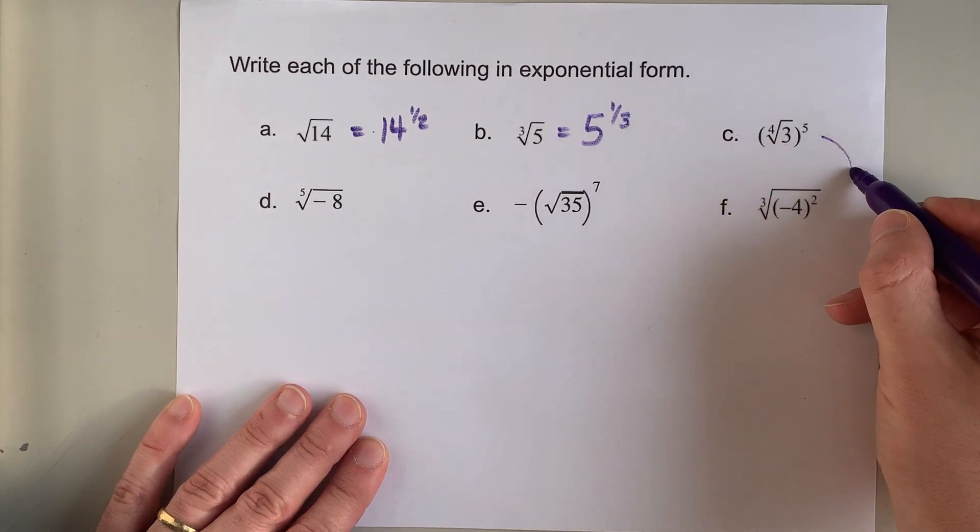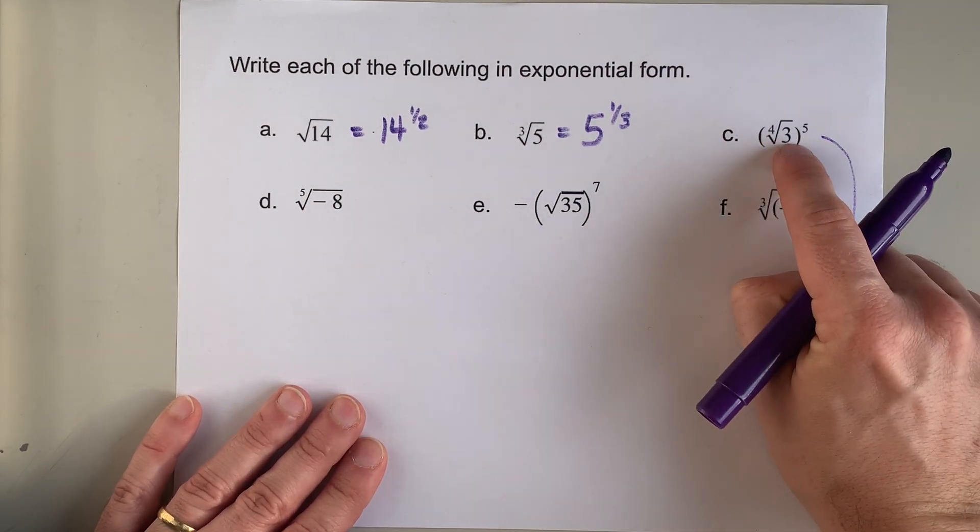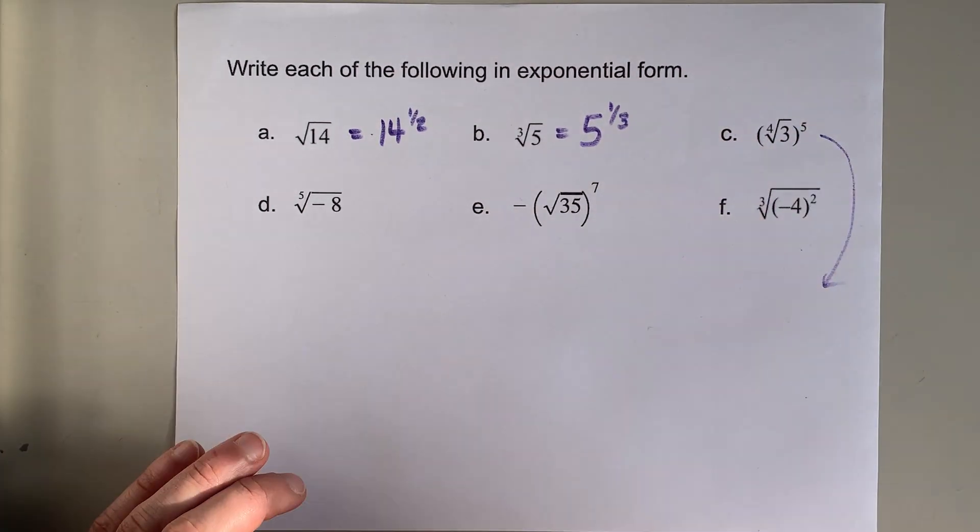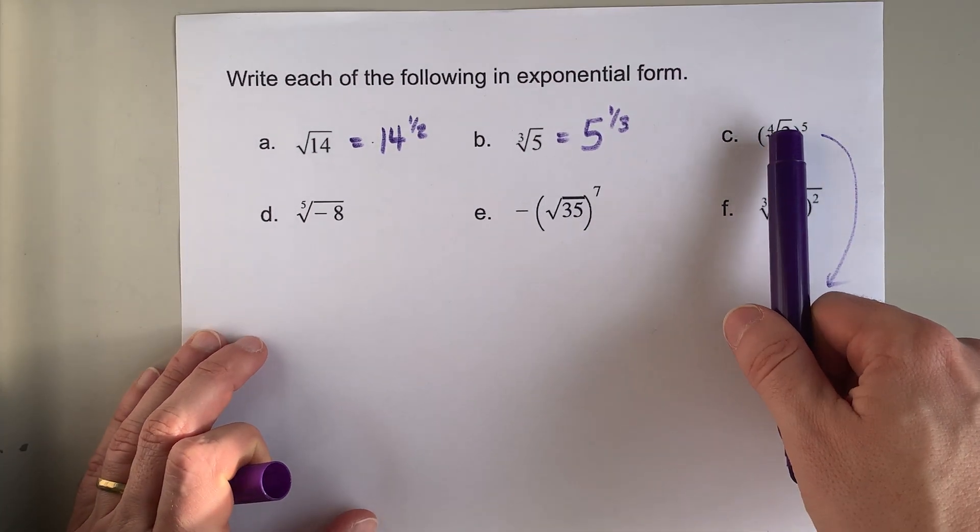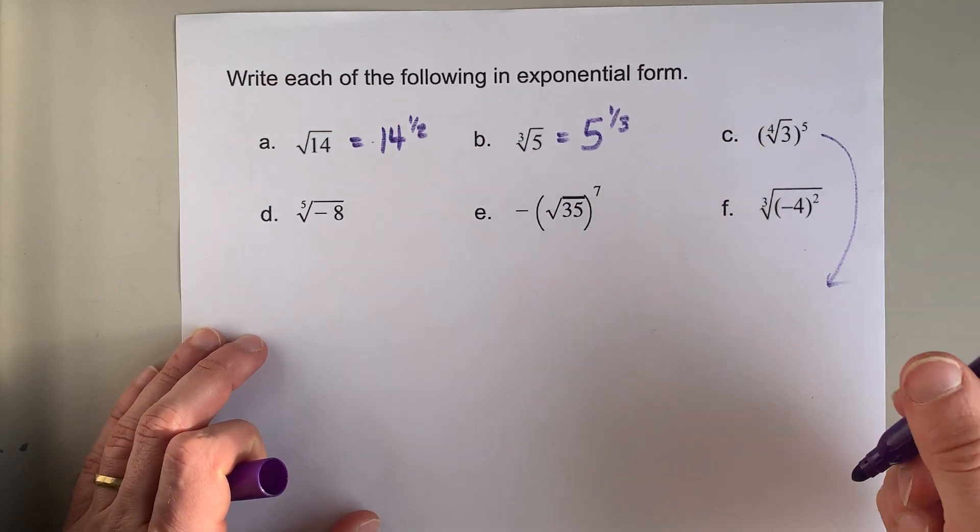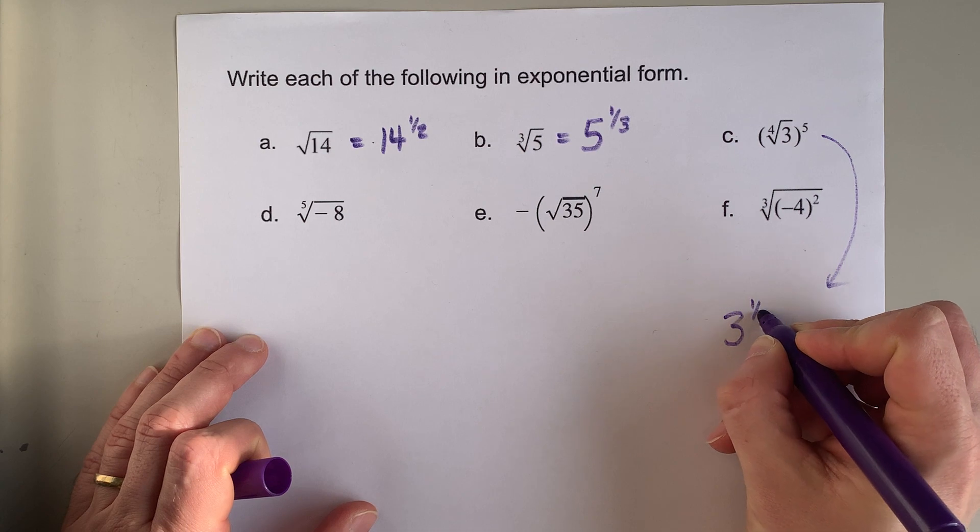Now, what that means is that if you have a root as well as a whole number exponent, you can convert the radical, in this case the fourth root, to an exponent and then use exponent rules to simplify.